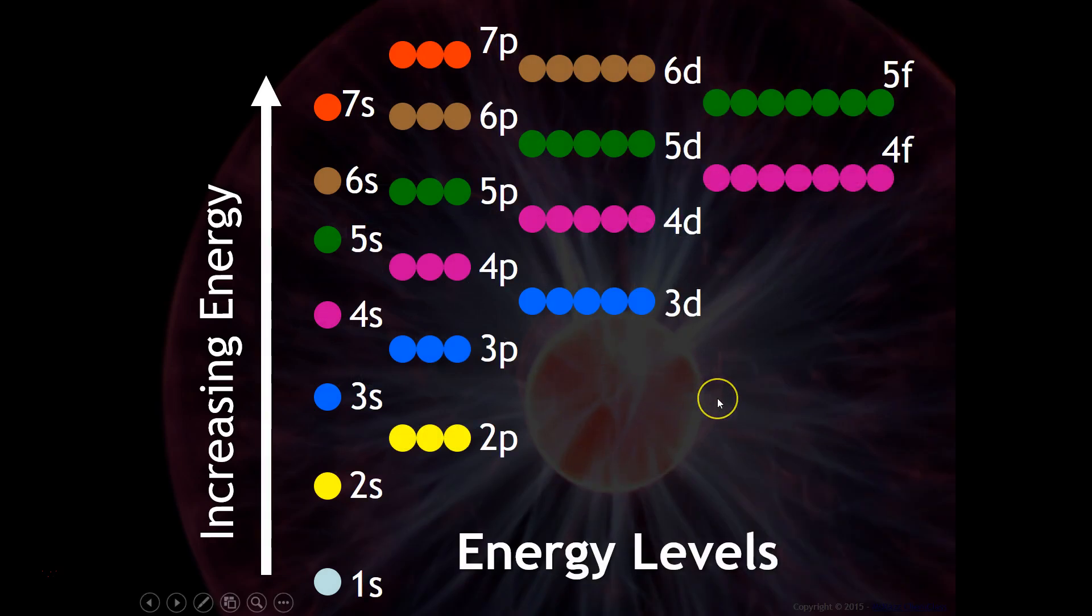This is what the diagram looks like. As I mentioned, the electrons are going to be filled in a certain order: 1s, then 2s, then from 2s into 2p, then from 2p into 3s, and then from 3s into 3p, and then from 3p into 4s.